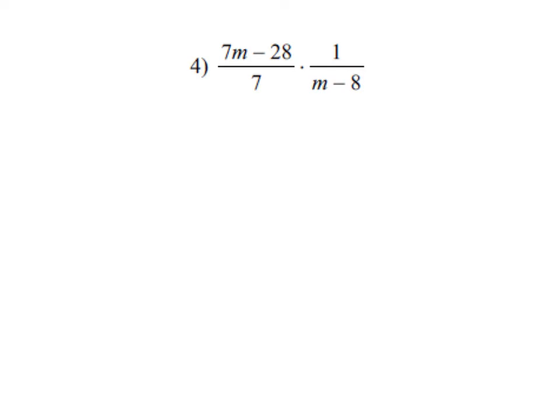This one is pretty similar to that, only it has just a touch of factoring we could try to do. If you look at all the different parts of this, this first numerator here, 7m minus 28, that could factor. Let's go ahead and factor that. That'd be a 7, and then an m minus 4, just by pulling out your GCF.